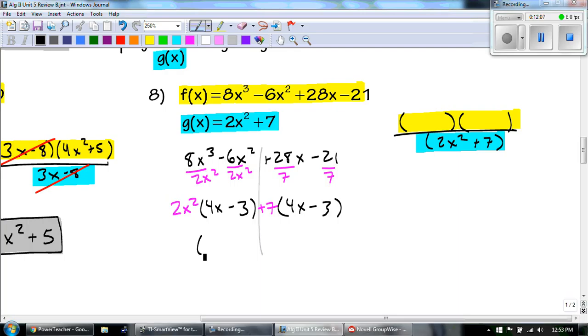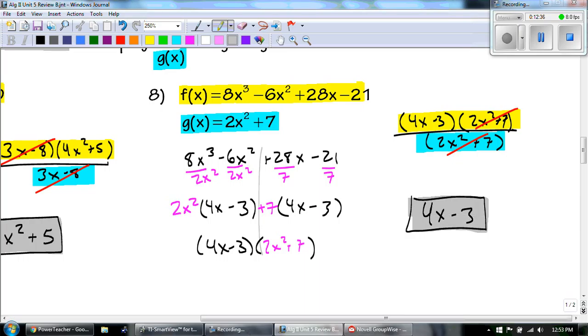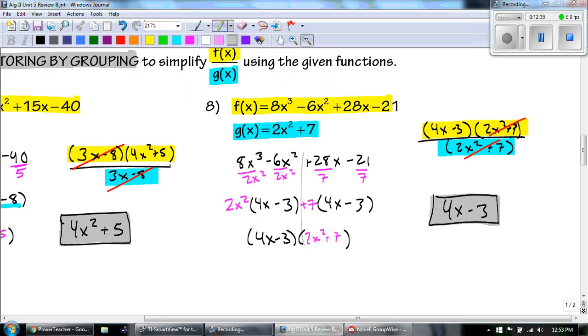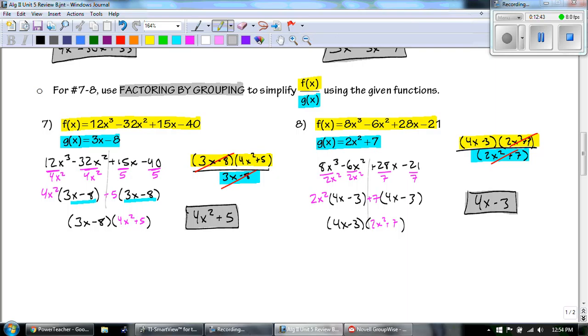So number 8, we're doing the same thing. We're dividing these two. Over here, we're going to break them up. I already know that I have a 2x squared plus 7 down here. I just got to figure out what 2 are on the top. So 8 and 6, I can take out a 2 and it's going to be a 2x squared. On the right side, 28 and 21, I can take out a 7. So we get 2x squared plus 7.